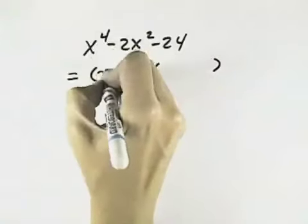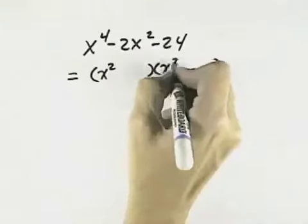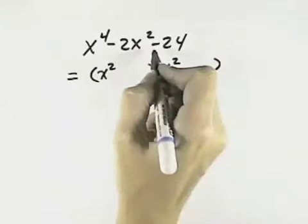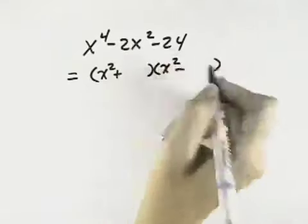To get x to the fourth in our first term, we need to have an x squared in each of the first places. Because the second sign is negative, that means our signs will be opposite. One will be positive, one will be negative.